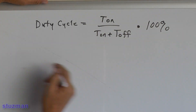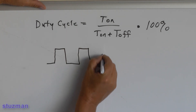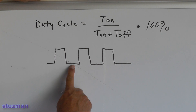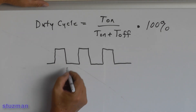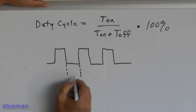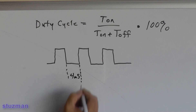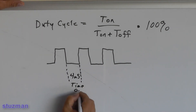Let's go back to our waveform. I'm going to use a ground side switch. Remember, if it's a ground side switch, the time that it's on is at the bottom, and the time that it's off is up here at the top. Let's say the time on is four milliseconds — so this down here is time on. And let's say the time off is one millisecond.